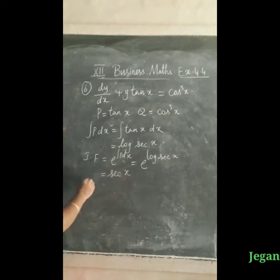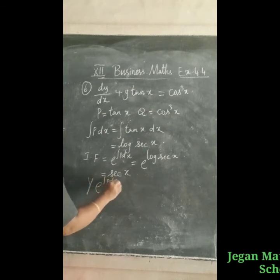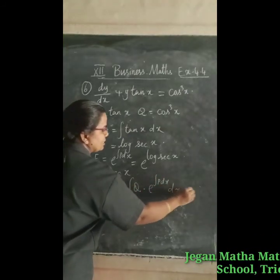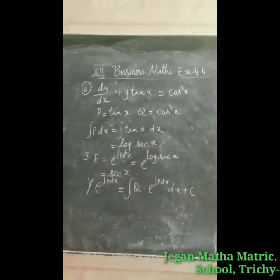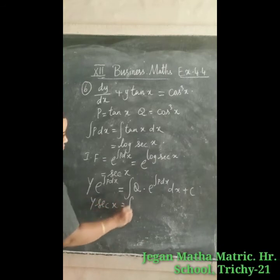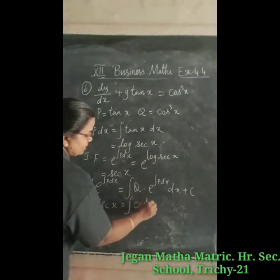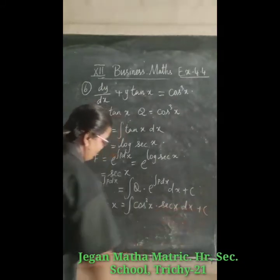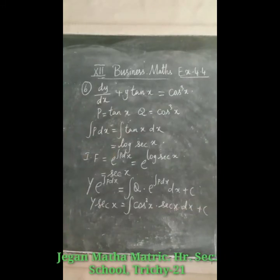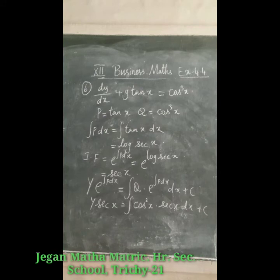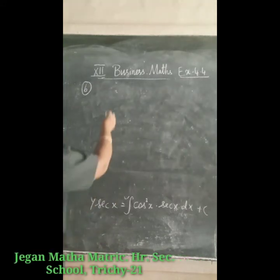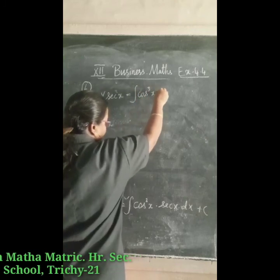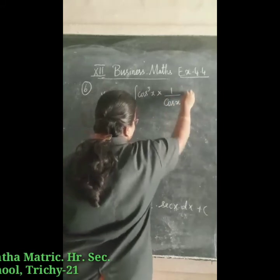The solution is: y·e^(integral of p dx) = integral of q·e^(integral of p dx) dx + c. Substituting, y·sec x equals the integral of cos³x times sec x dx plus c. Since sec x = 1/cos x, this becomes the integral of cos³x·(1/cos x) dx plus c.